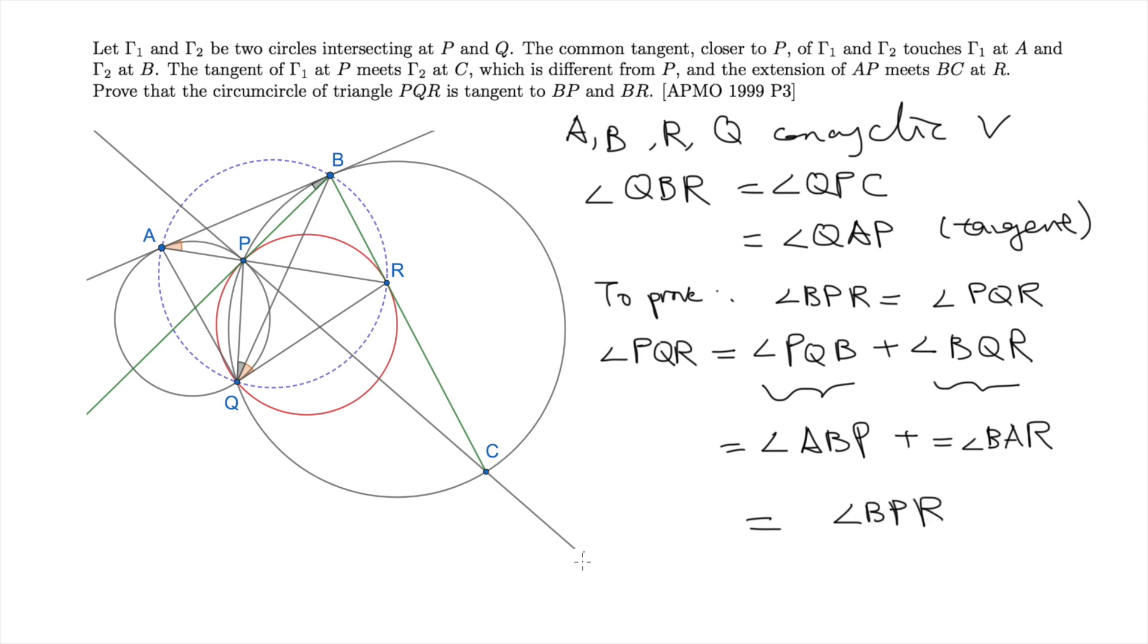So now we have proved that BP is tangent to P, Q, R. And it is really the same thing to prove that BR is also tangent to P, Q, R. I am sure that you will figure it out.